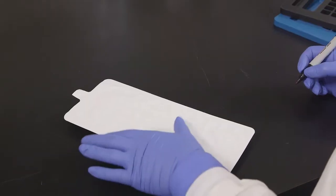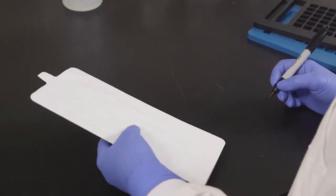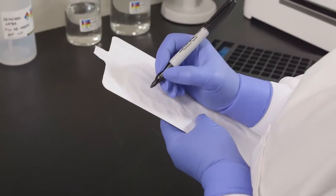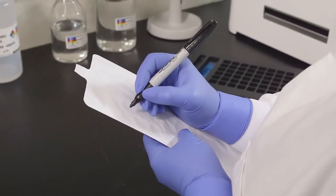Use only a permanent felt tip marker to label the QuantaTray. Adhesive labels may adhere to the sealer roller and ballpoint pens may puncture the paper.